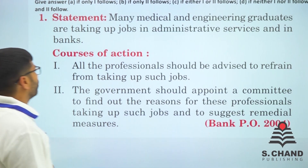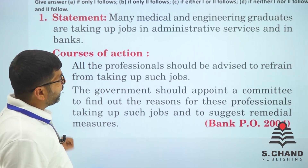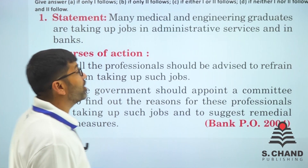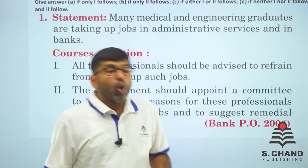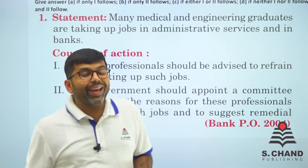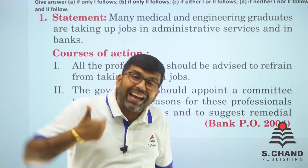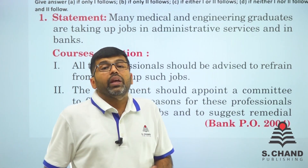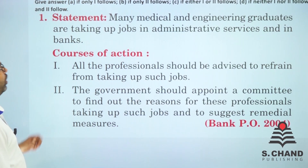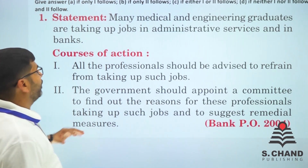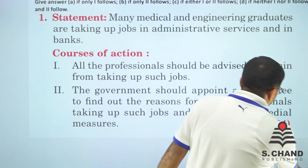Course of action II: 'The government should appoint a committee to find out the reasons for those professionals taking up such jobs and to suggest remedial measures.' The government should form a committee to find out why engineers are leaving their field and what remedy can be applied. So only the second course of action is correct.